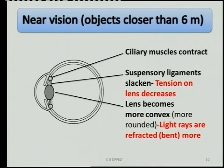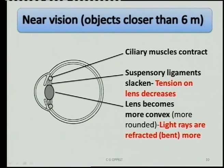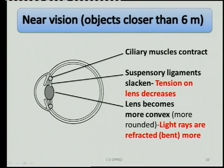That's for further vision. Now the opposite happens for closer vision. When we look at objects closer than six meters away from the eye, the opposite process occurs. You can see the shape of the lens — as explained, it was flatter for distant vision, and now it is rounder or more convex. As the tension on the lens decreases, the suspensory ligaments slacken.